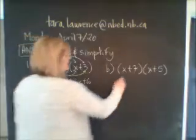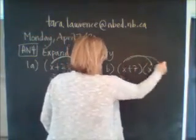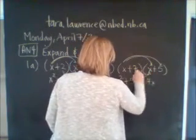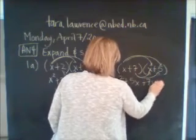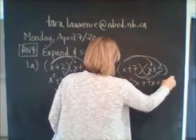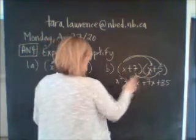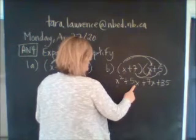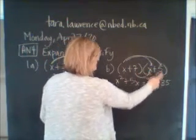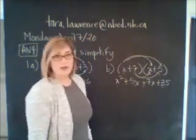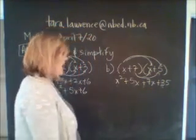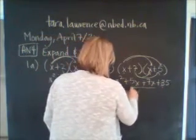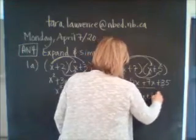This next one is done in the same way. x times x is x squared; x times 5 is 5x. Moving on to the second term, 7 times x is 7x, and 7 times 5 — I almost wrote 12, but we know the answer is 35 because it's multiplication, not adding. You've got to collect these up, which now it is adding. So it's x squared plus 12x plus 35.